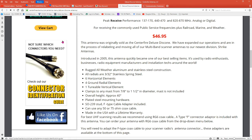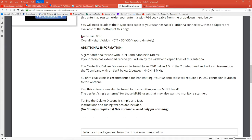It says gain or loss of zero dB, and it's a great antenna for use with dual band handheld radios. It can be tuned to an SWR below 1.5 in the two meter band, and it will also transmit on the 70 centimeter band with an SWR below 2 between 440 and 448. We'll measure it with the NanoVNA and see what it says.